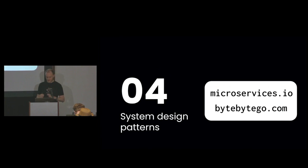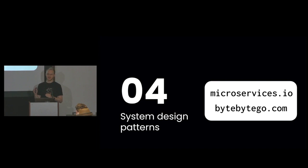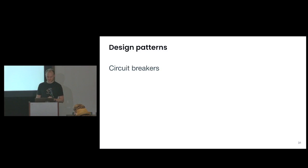Now to the title promise of system design. We'll go through a number of patterns, and I won't assume any knowledge — I'll give a concise overview of each pattern and then how it's done, or simplified, with durable execution. Two great resources are microservices.io, which lists many patterns, and ByteByteGo, which has a great system design newsletter. First: circuit breakers.